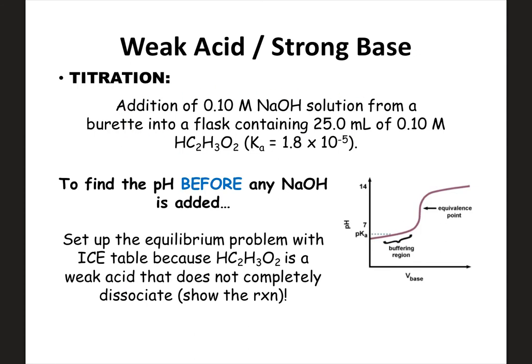We're looking at a weak acid in our flask being titrated with the strong base NaOH. If we want to find the pH before any NaOH is added, in a strong-strong problem the analyte was a strong acid or base, so you just did the negative log of the concentration. But here in a weak-strong problem, the analyte is weak, so you can't just do the negative log of the concentration. You have to set up a weak equilibrium problem and do an ice table.